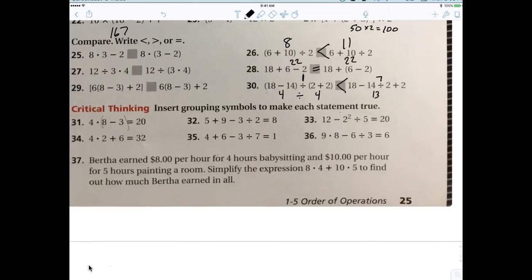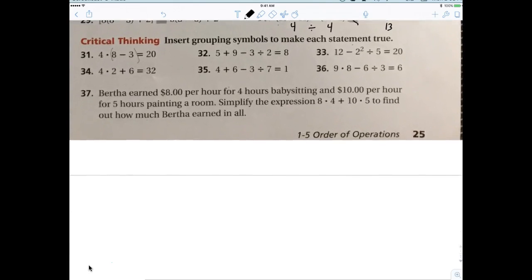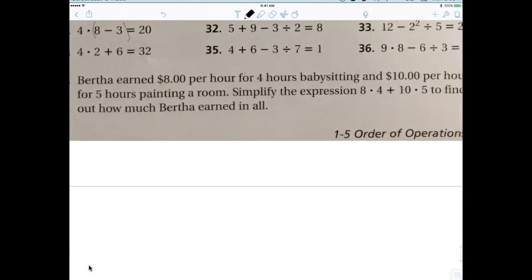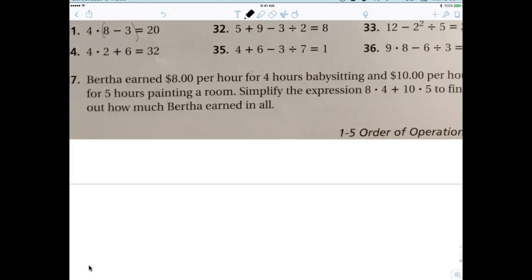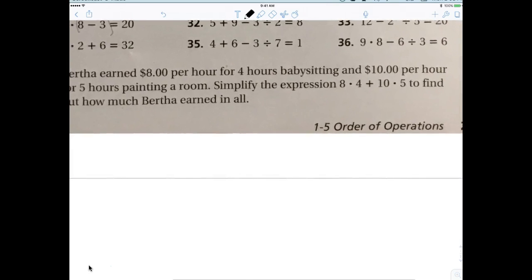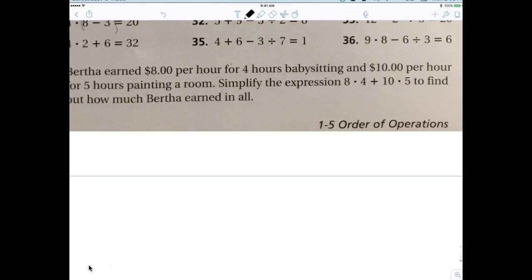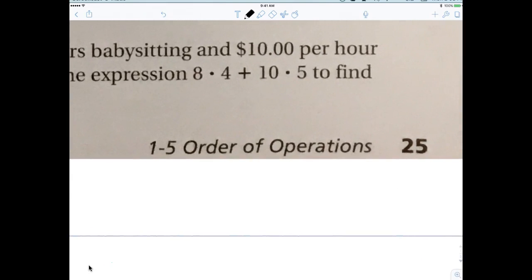It was 1 through 30 and then 37, right? So, Bertha earned $8 per hour for 4 hours babysitting and $10 per hour for 5 hours painting. I need to simplify this expression. So, 8 times 4 is 32. Right. And then, 10 times 5 is 50. And then, that would be 82. Good job. Very nice. 82 bucks she made.